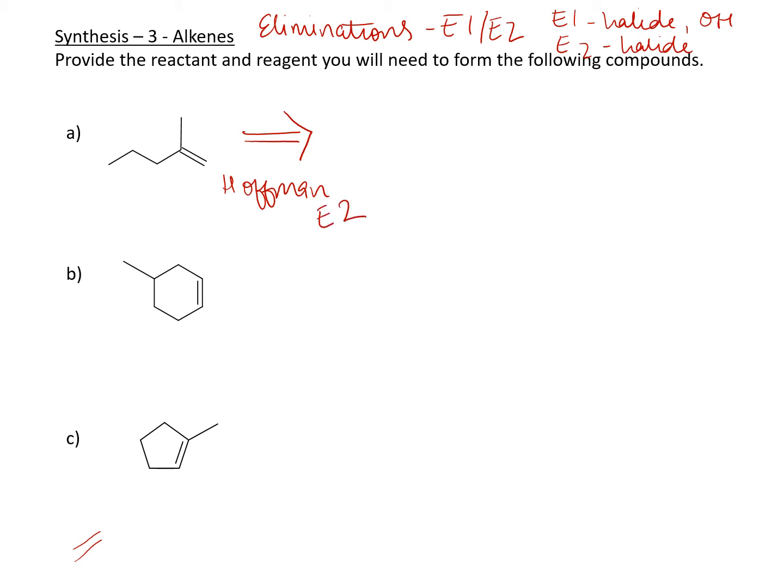If this is a Hoffman alkene, it means that I am primarily going to look towards E2. So then I have to think about what are my conditions for E2. My conditions for E2 are going to be that I need a bulky base and I need a halide. Maybe a secondary halide would work. So I have one, two, three, four, five carbons.